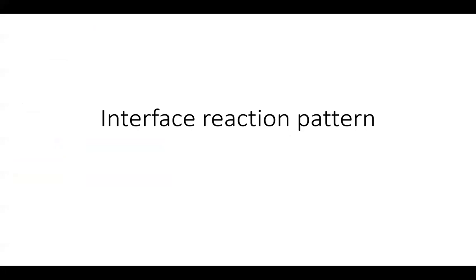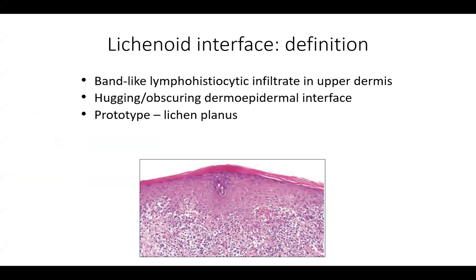We are going to discuss the interface reaction pattern. We'll start with lichenoid interface. The definition involves a band-like lymphohistiocytic infiltrate in the upper dermis. In the lower image, you can see this dense lymphocytic band-like inflammation obscuring the dermal-epidermal junction, with some areas of vacuolar change, which you often get with lichenoid inflammation.